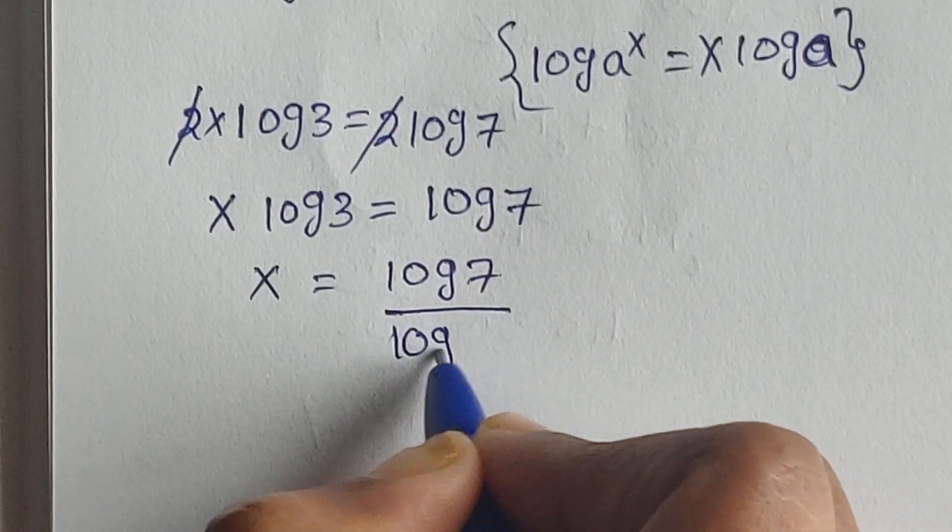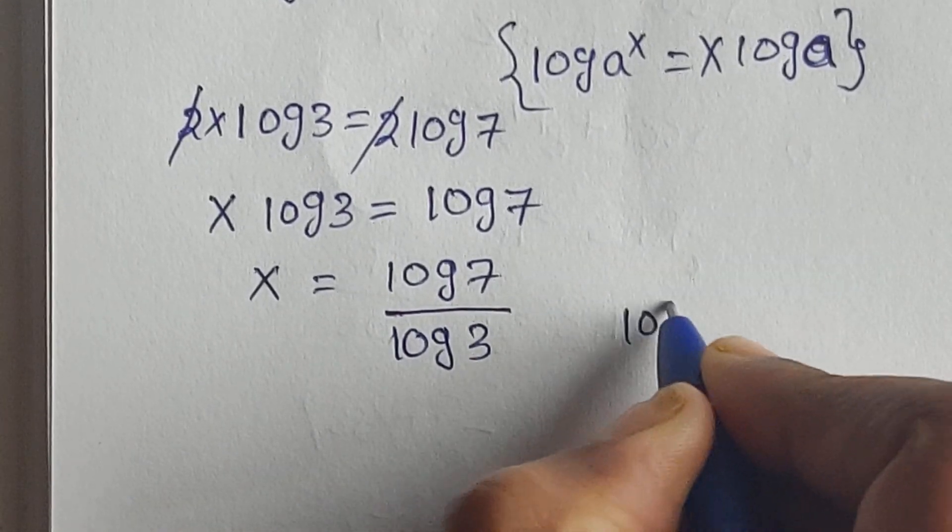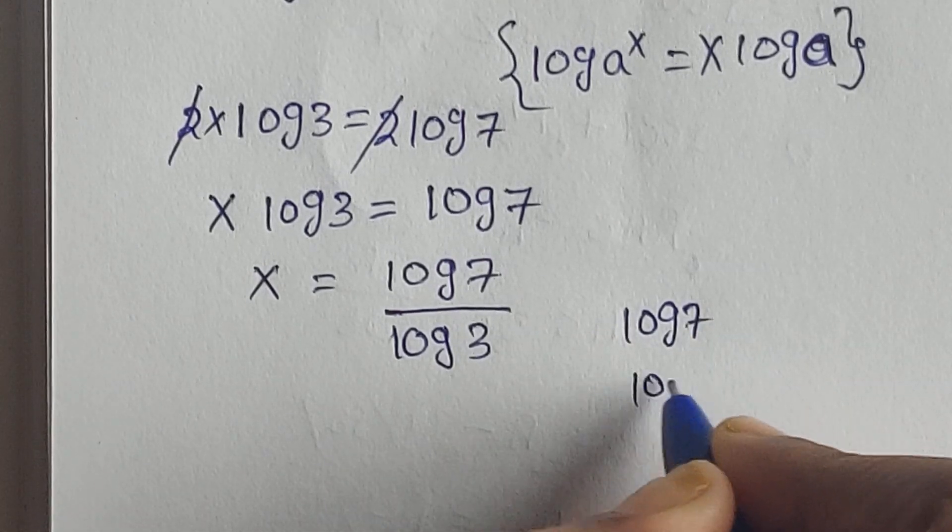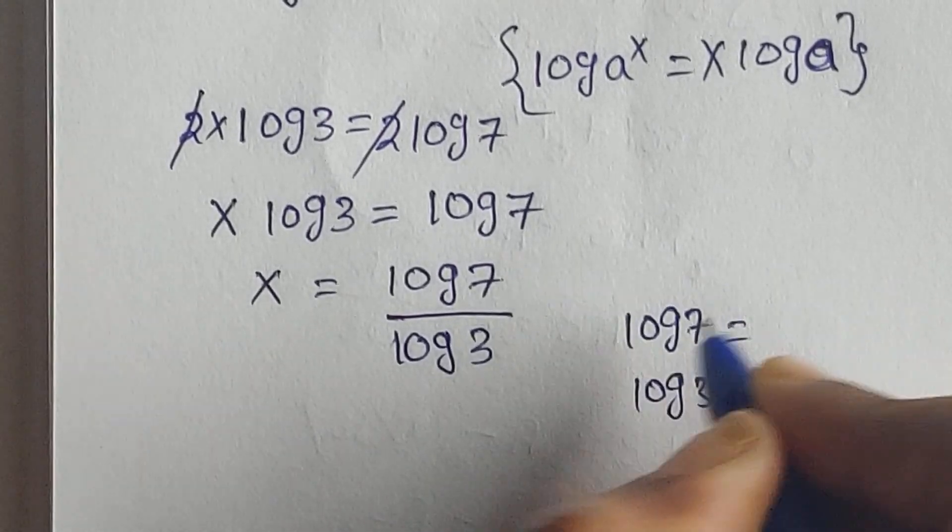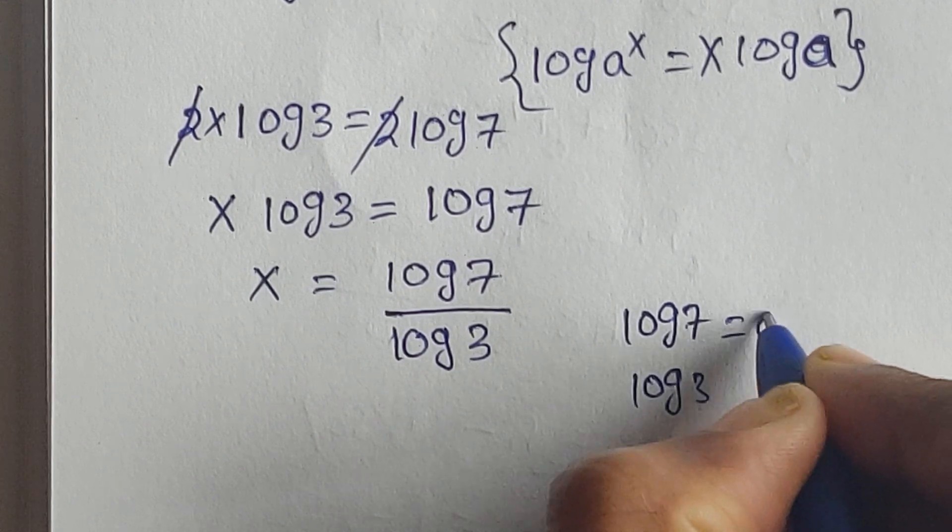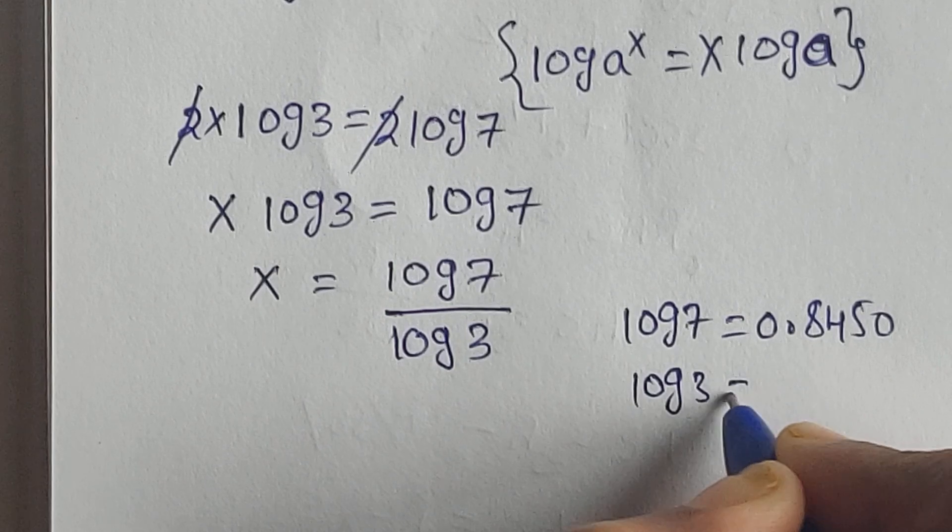So we know the values of log 7 and log 3. Log 7 value is 0.8450 and log 3 value is 0.4771.